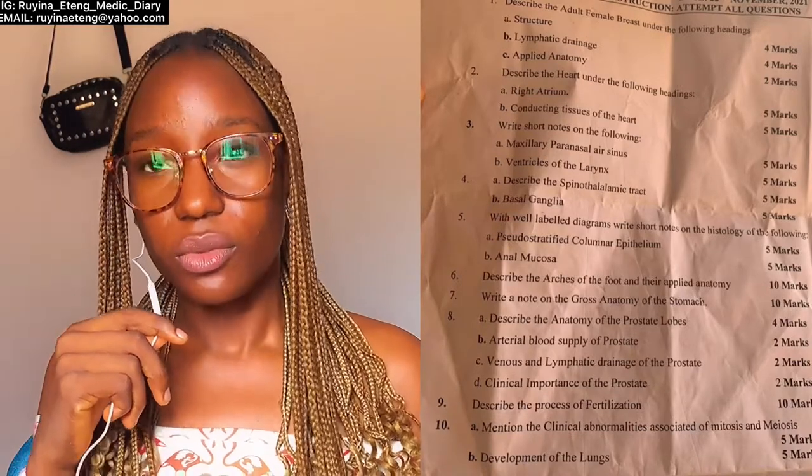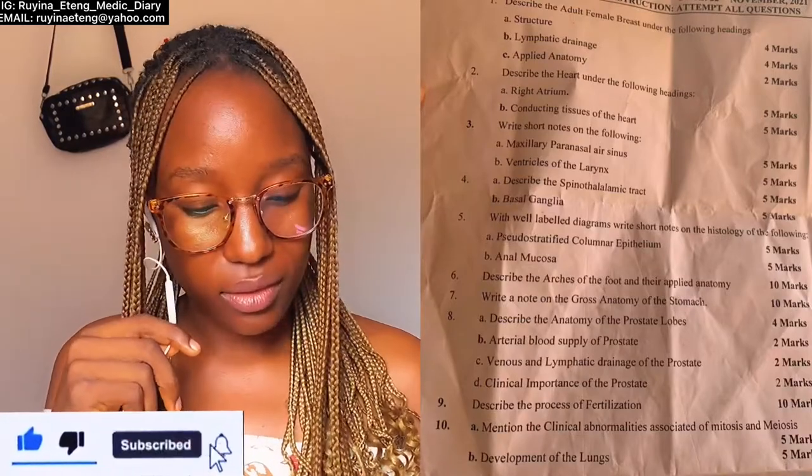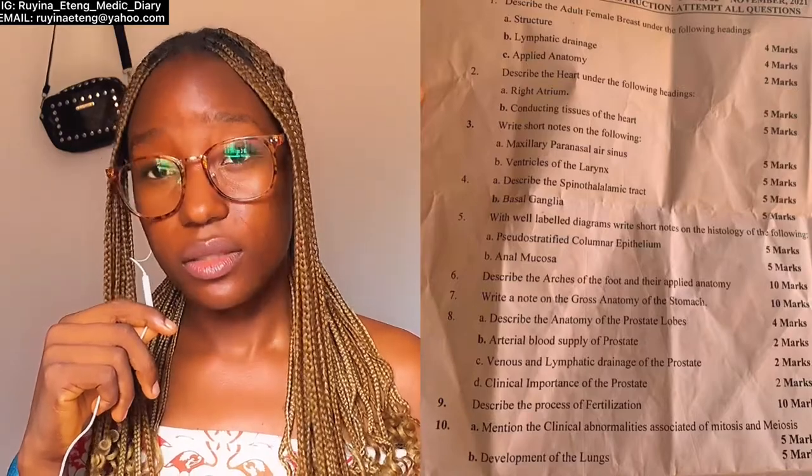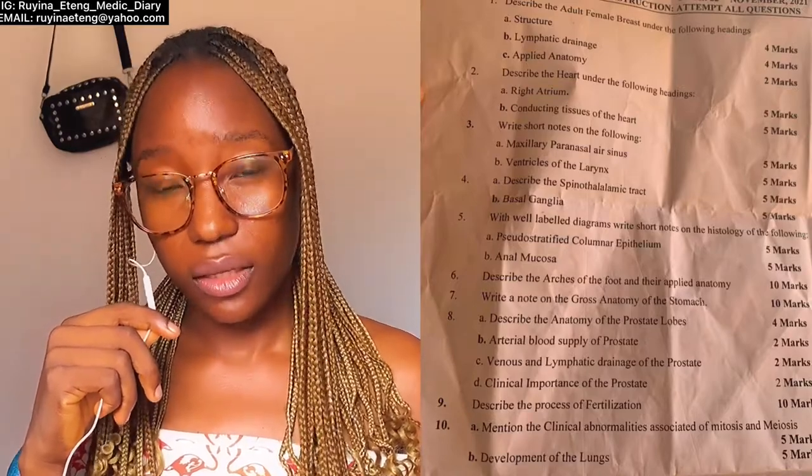For pseudostratified columnar epithelium, start with an introduction. Explain why it is called pseudostratified, why it is called columnar, where it is found — the location — and what its function is. Clinical anatomy is not very important here. However, there are some appendages that can be added to this epithelium, like the cilia. Please include that if you can.